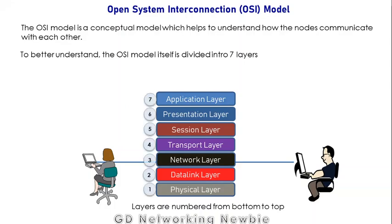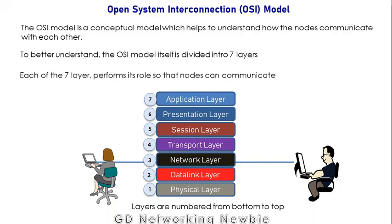From the bottom, the first layer is the physical layer, the second is the data link layer, the third is the network layer, the fourth is the transport layer, the fifth is session, the sixth is presentation, and the seventh is the application layer. Each of these seven layers performs its role so that nodes can communicate.